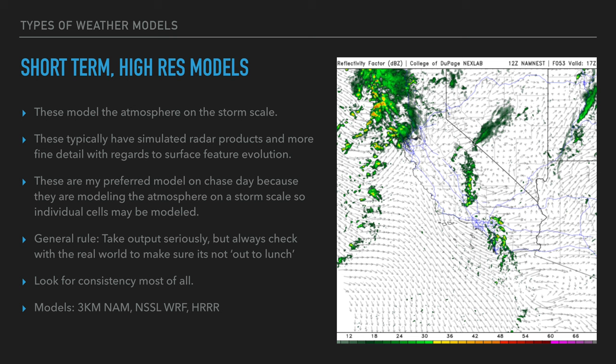Short-term high-res models include the NAM 3-kilometer, the NSSL WoFS, and the HREF — or the HRef, whatever you want to call it. Look for consistency among these models.